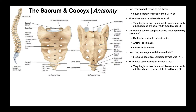First of all, how many sacral vertebrae are there? There are five sacral vertebrae named S1, S2, S3, S4, and S5. You can see these right here. In a fully grown and mature adult, all five of these sacral segments, S1 through S5, are fused.